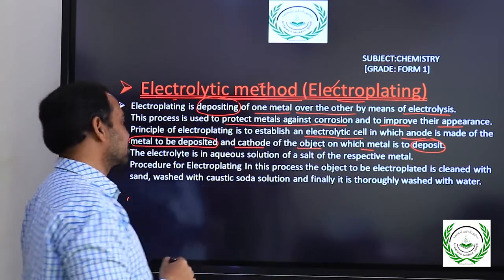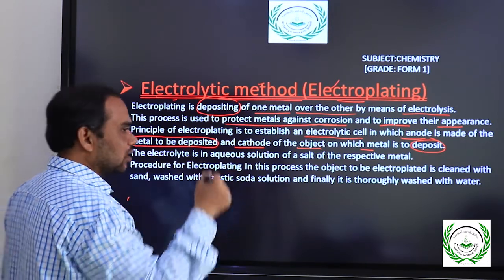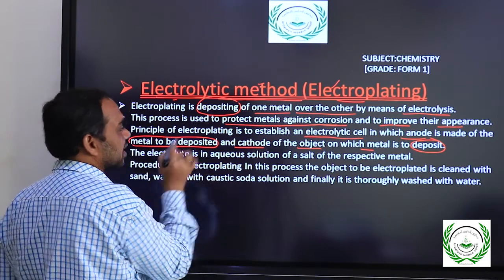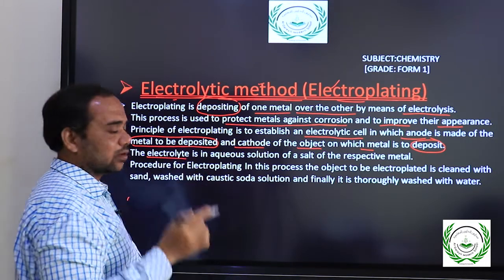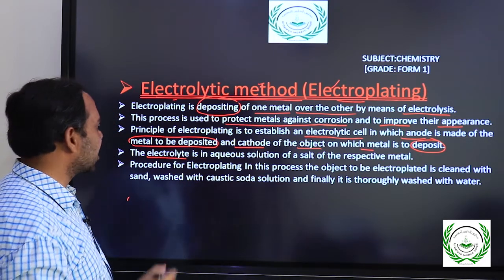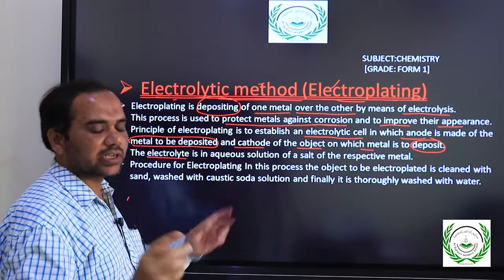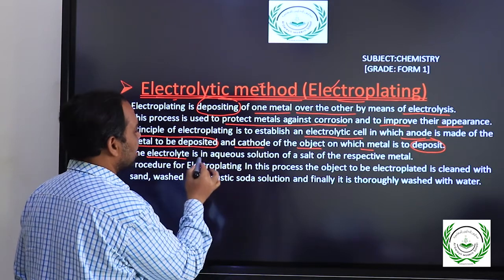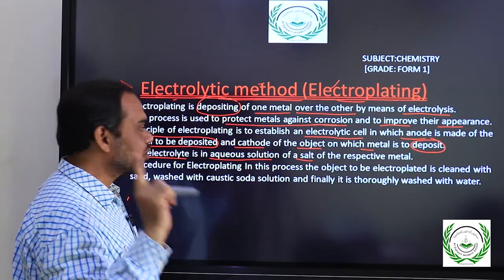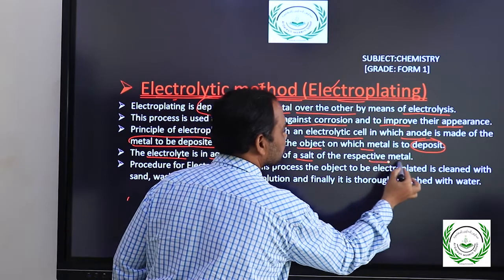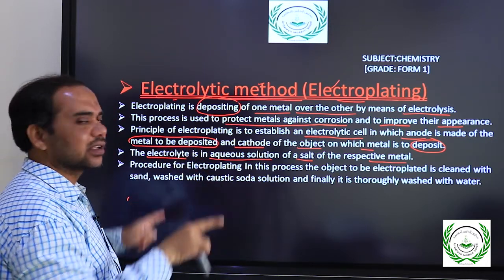On the cathode, the pure metal is coming and depositing — so the pure one is anode and the object to be plated is cathode. The electrolyte is a chemical in aqueous solution which can dissociate into ions. Electrolyte is an aqueous solution of a salt, and the salt of the metal being used for electroplating will be the electrolyte.